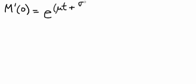Taking the first derivative of the moment-generating function and evaluating it at t equals 0, we get e to the mu t plus sigma squared t squared over 2 times,